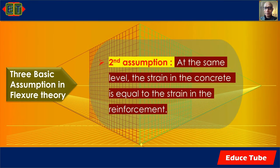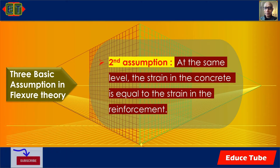The second assumption is that at the same level, the strain in the concrete equals the strain in the reinforcement. This is very important because the concrete and the reinforcement must act together to carry the load. This assumption implies a perfect bond between the concrete and the steel.